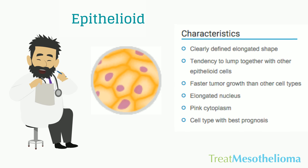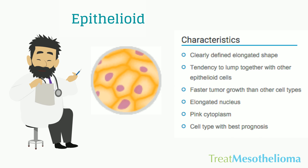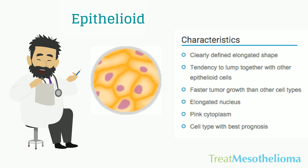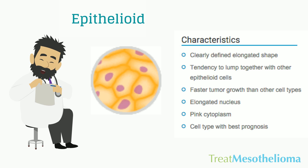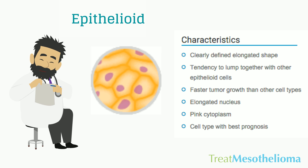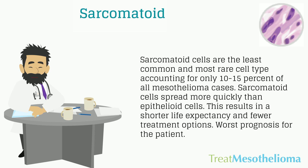The epithelioid cell characteristics are: clearly defined elongated shape, tendency to lump together with other epithelioid cells, faster tumor growth than other cell types, elongated nucleus, pink cytoplasm, and it is the cell type with the best prognosis.